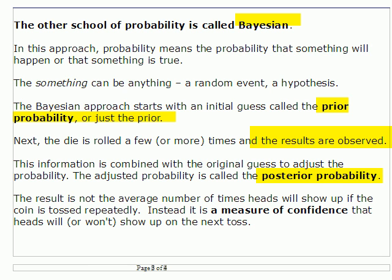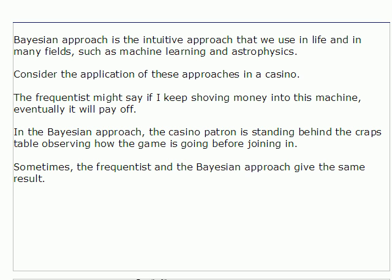This is a little more useful, but it does require several steps. One criticism of the Bayesian approach is what do you select for the prior probability — often it's the same thing you would use in the frequentist approach. The Bayesian approach is actually more intuitive; it's what we use casually in life. It's also used formally in many fields such as machine learning and astrophysics.